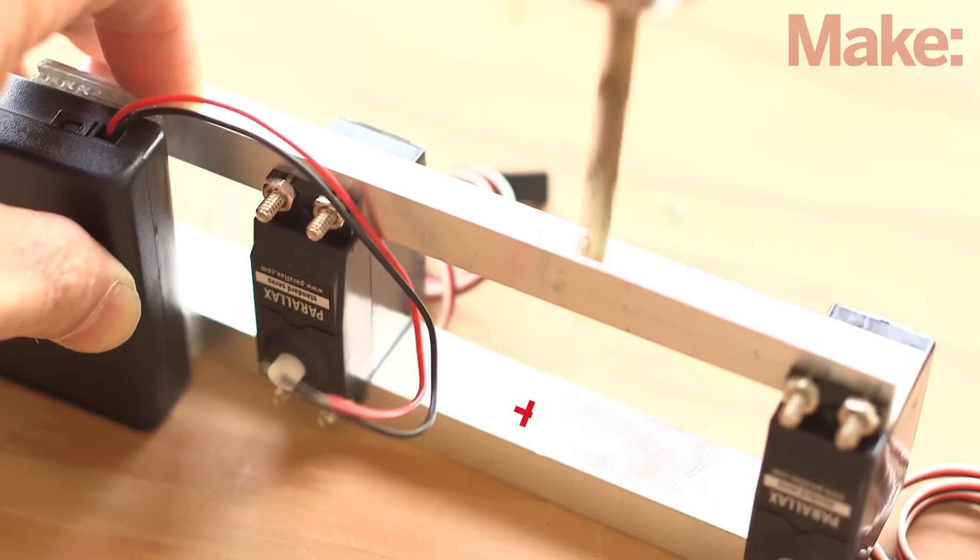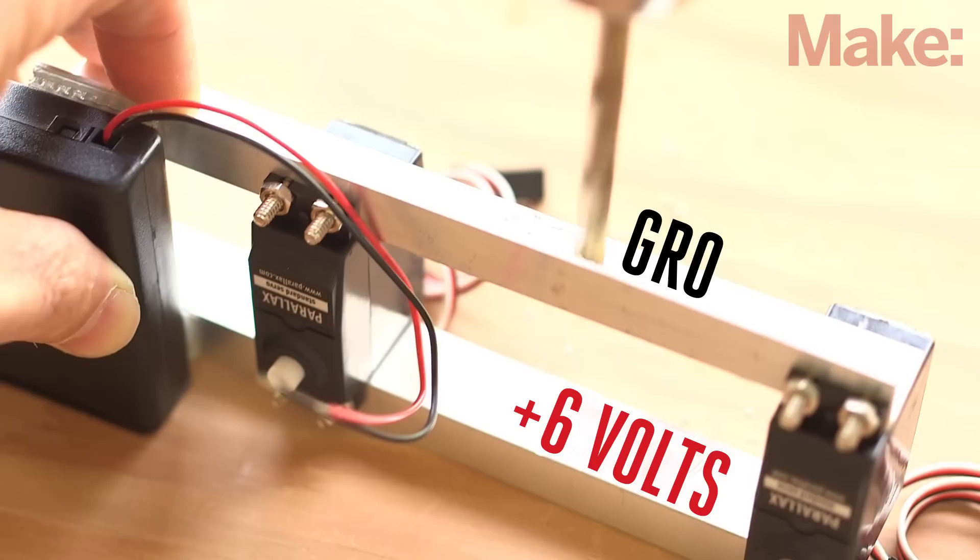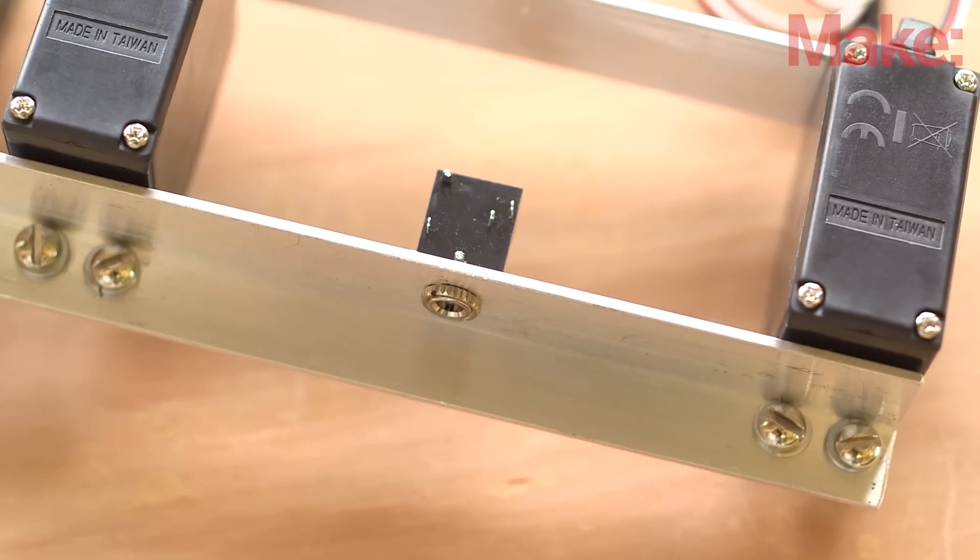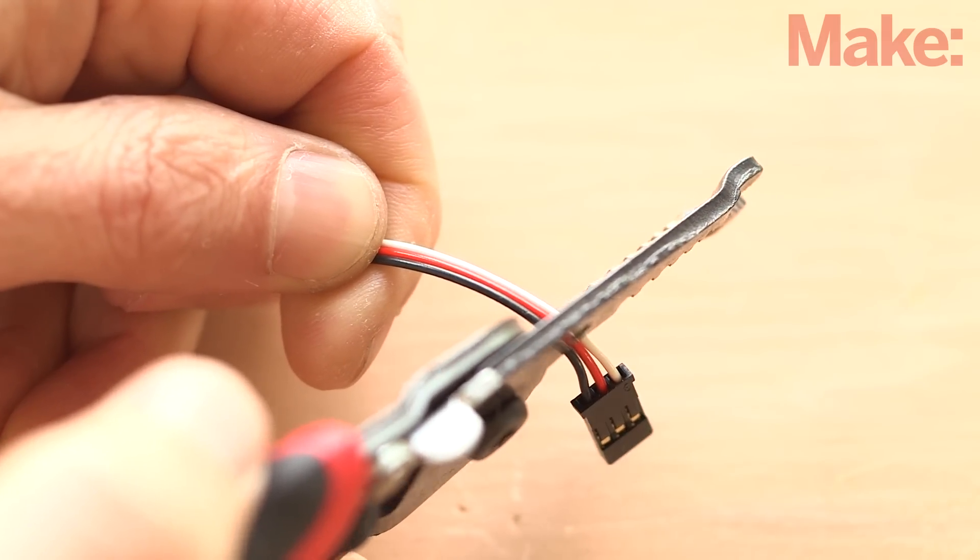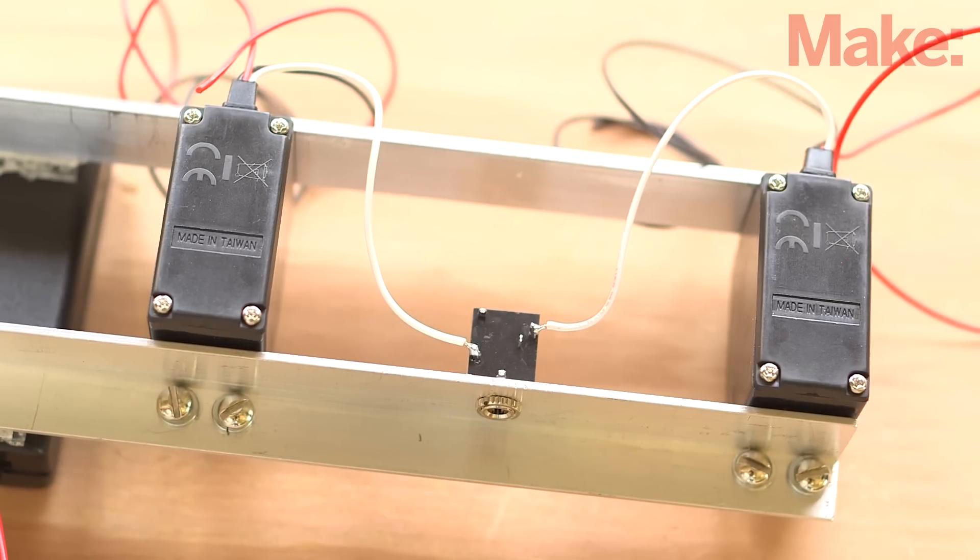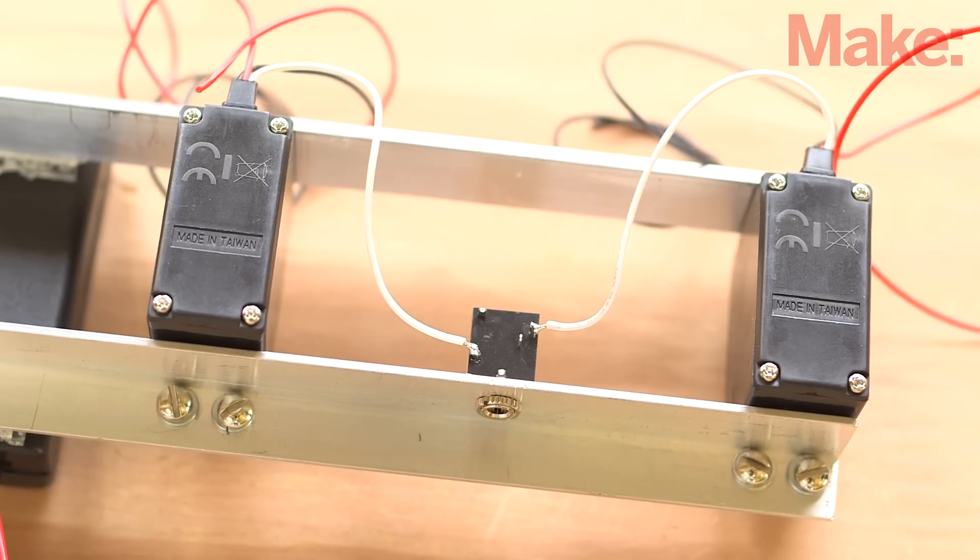The rail nearest the servo shafts is six volts and the opposite rail is ground. Drill a hole in the ground rail halfway between the two servos and mount the TRS jack. Next, cut the connectors off the servo cables and separate the wires, then strip and solder the white signal wire from each servo to the TRS jack. The shoulder wire goes to the tip contact and the elbow wire goes to the ring contact.